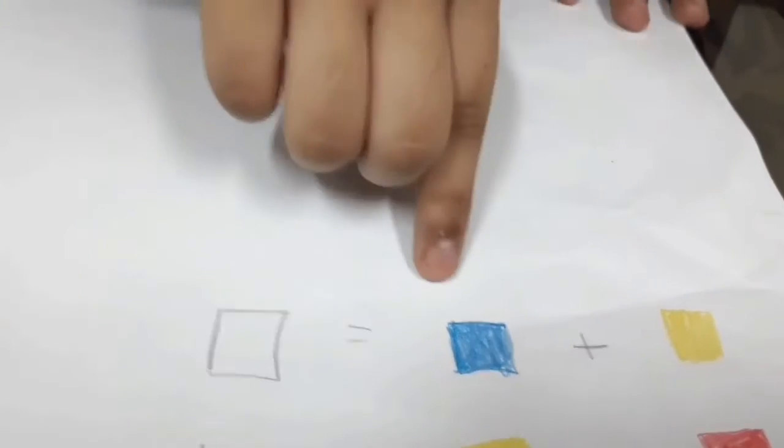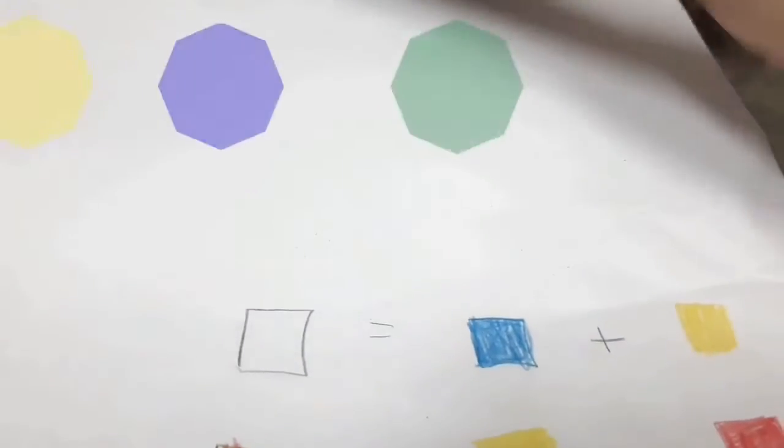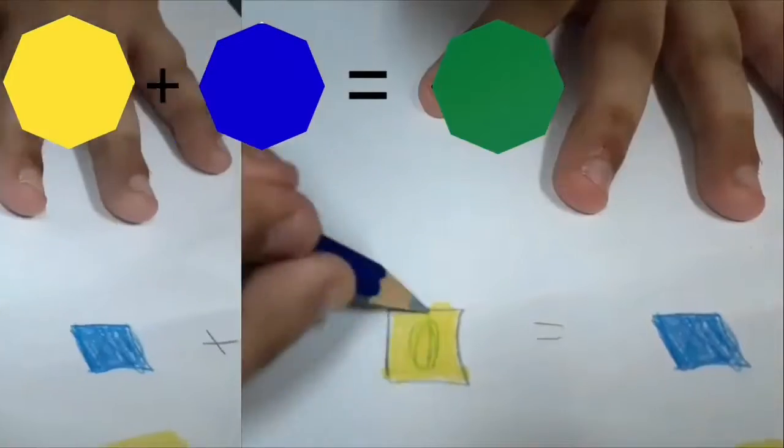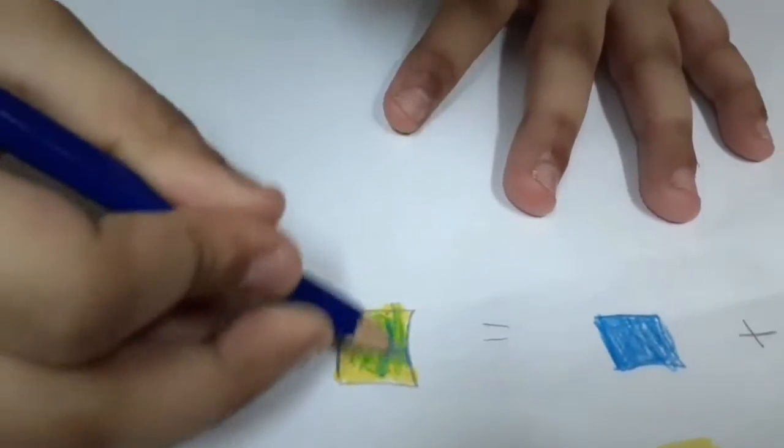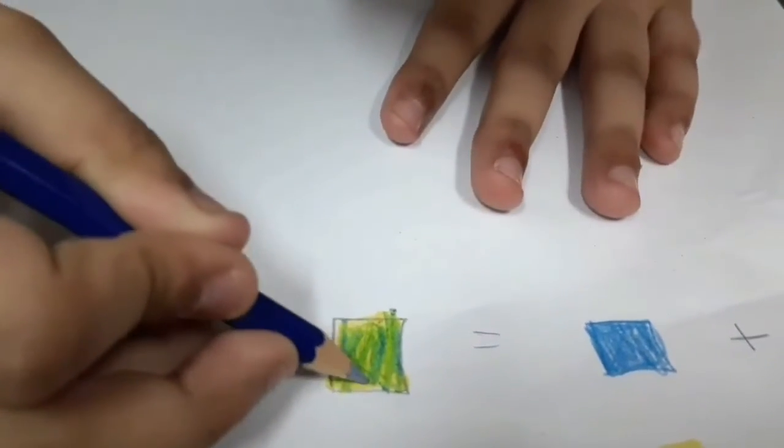Yellow and blue mix together to make green. Yellow. See the color green? You can see it perfectly. Can you see it guys? Look at it.